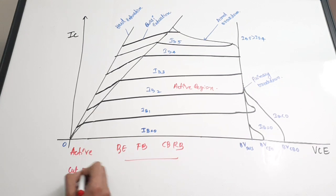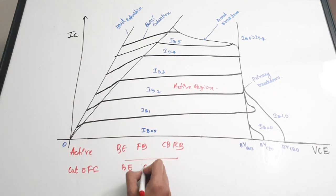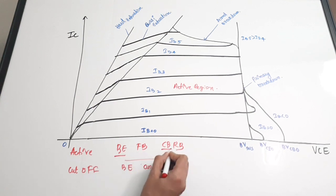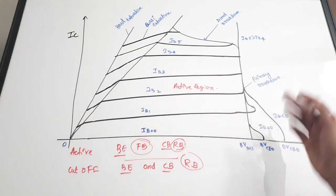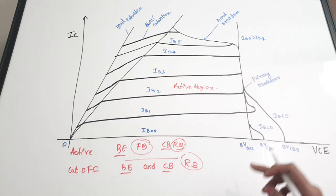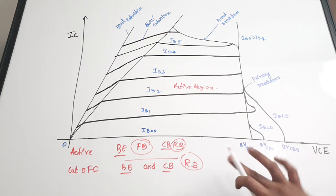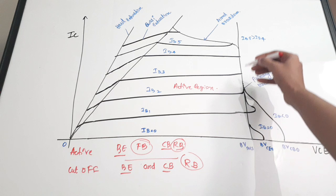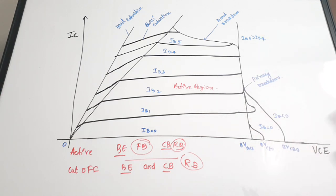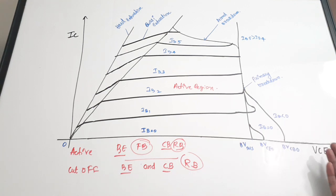In cutoff mode, both the base-emitter and the collector-base junctions are reverse biased. When the IB value is zero, the value of IC is also zero, but after a point when we increase VCE, there is a breakdown happening. When we increase the collector-to-emitter voltage beyond the breakdown voltage, there is a shoot up - an increase in collector current. The collector current rises from zero to a particular value. This occurs because the voltage is being increased beyond the breakdown voltage.